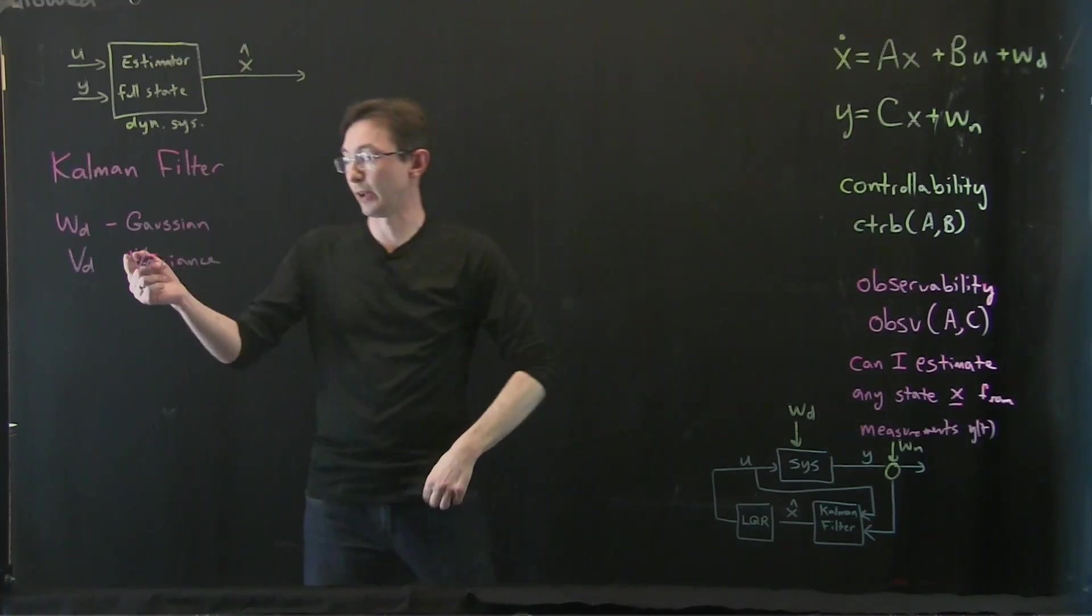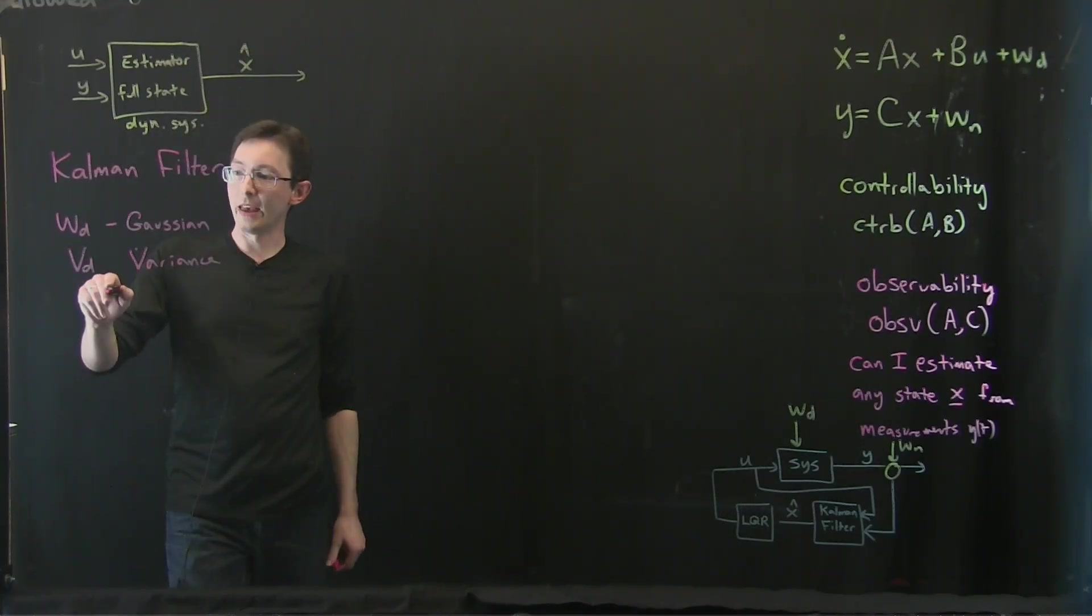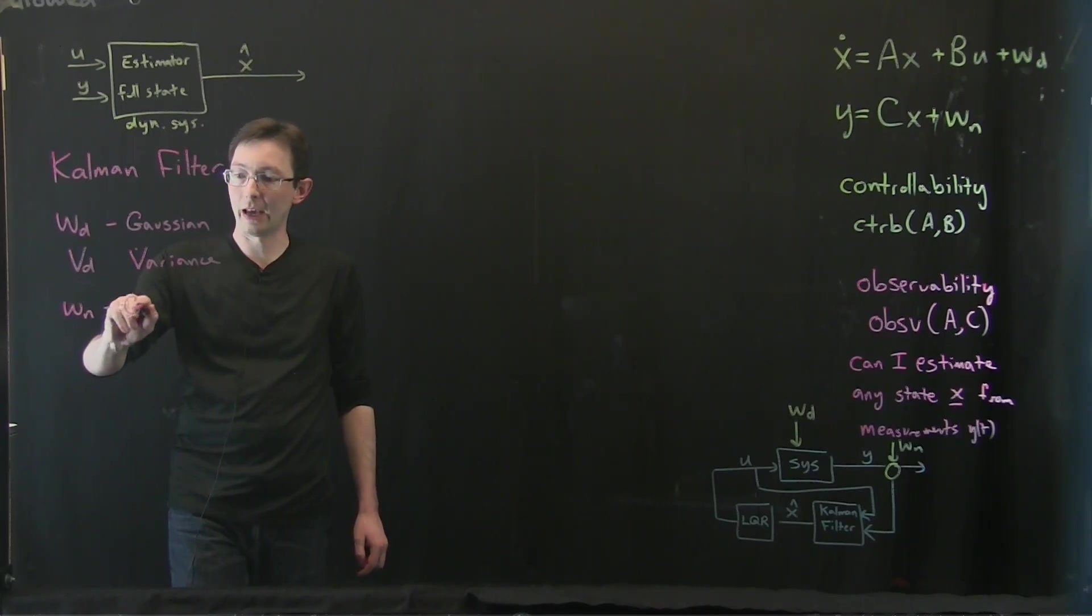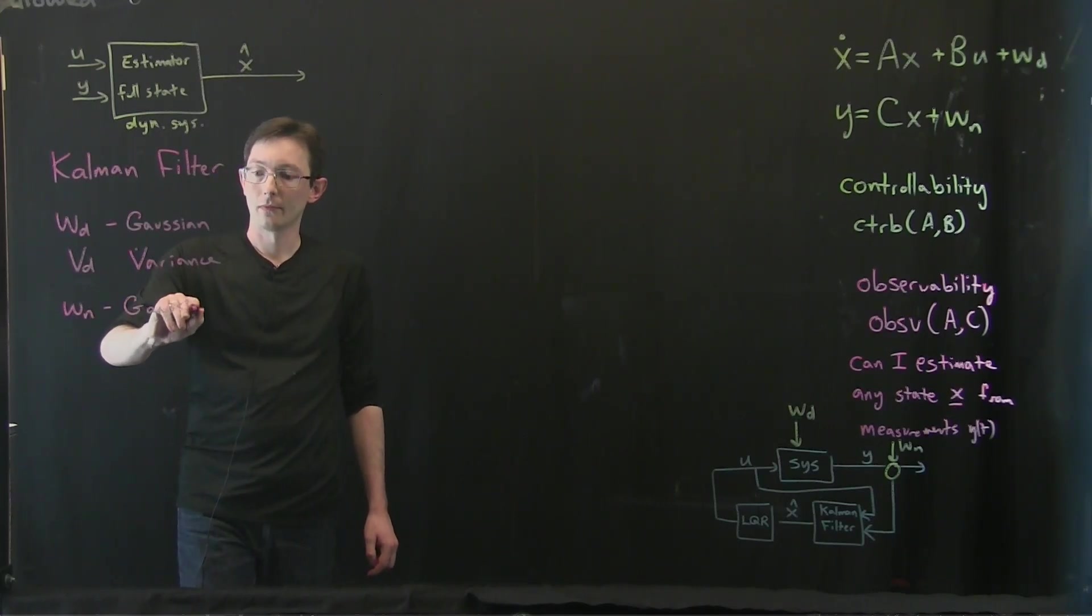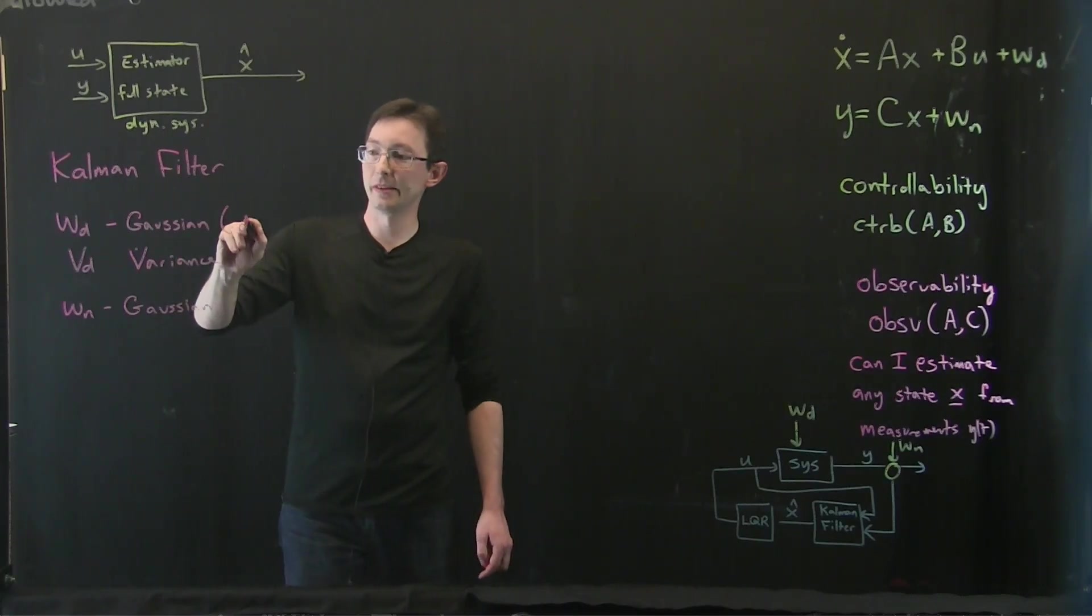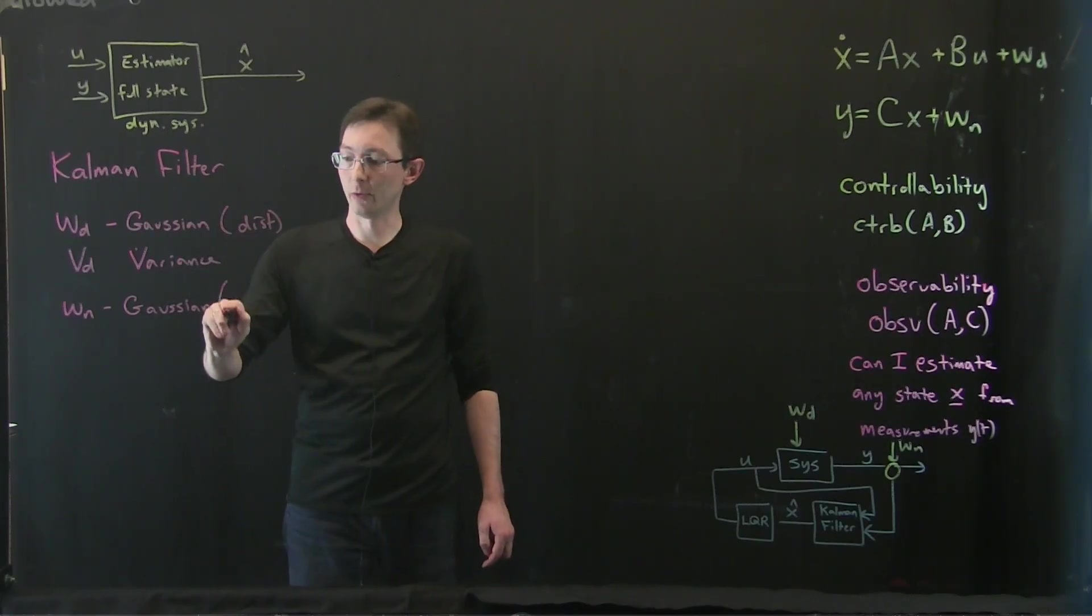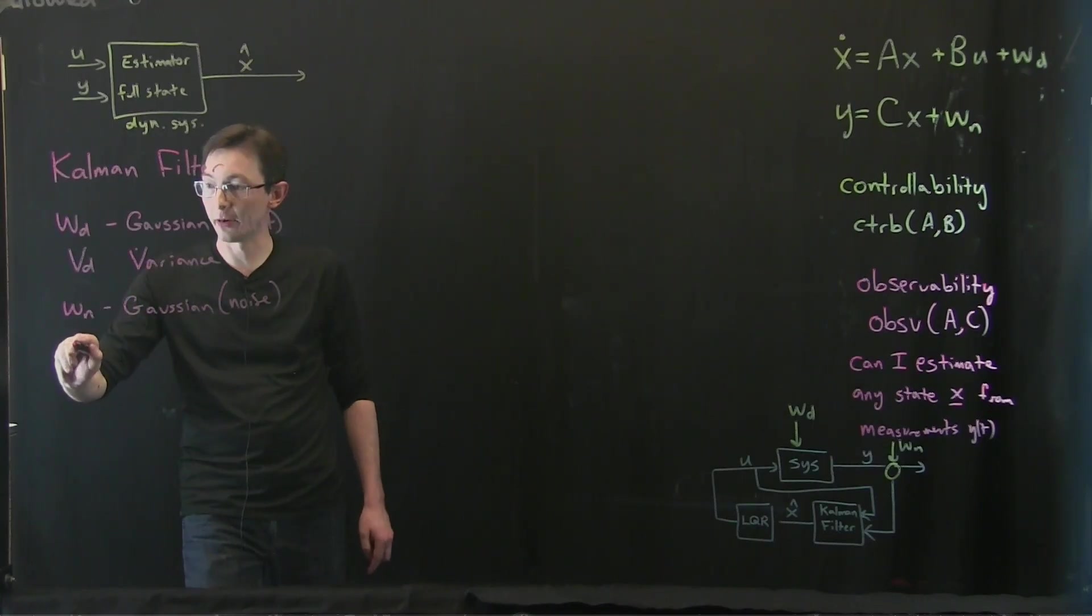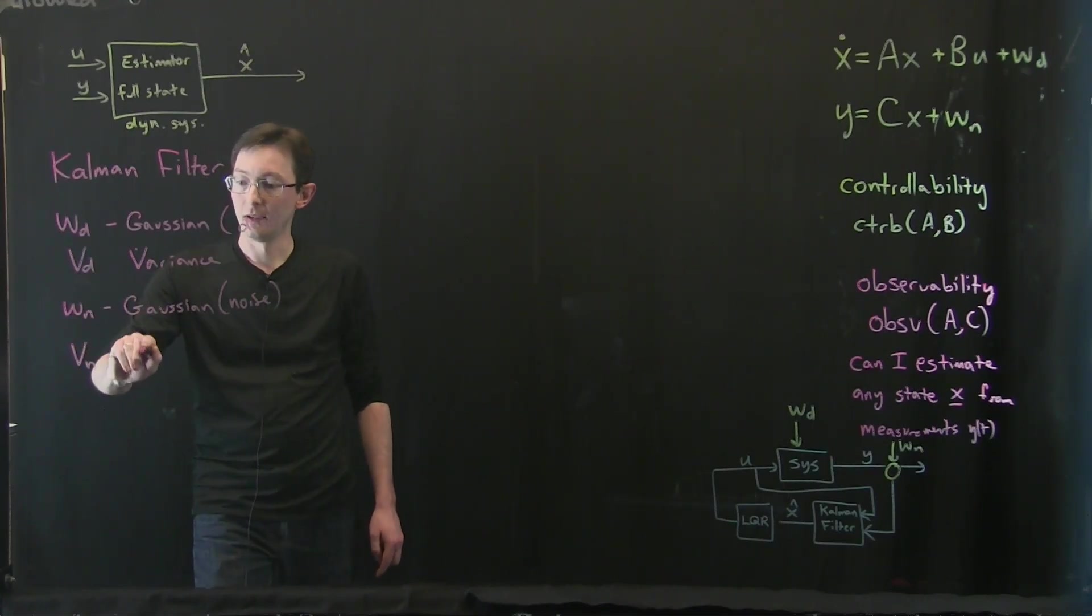And then let's say that Wn is also Gaussian. The first one is my disturbance, the second one is my noise. And it also has some noise covariance, some Vn variance.